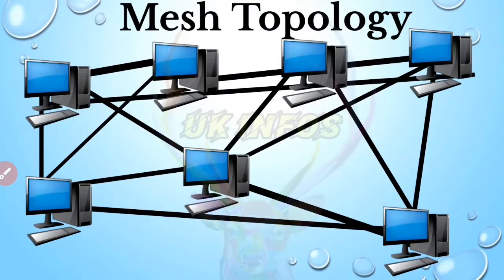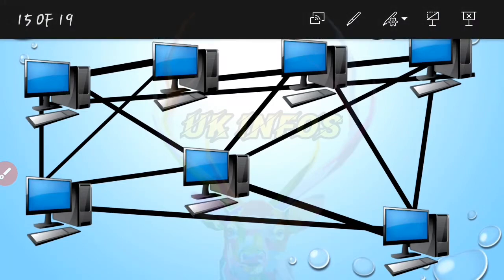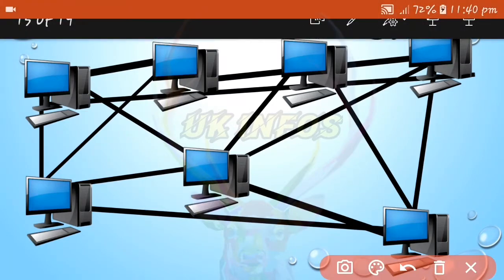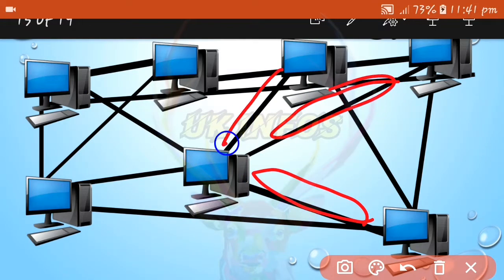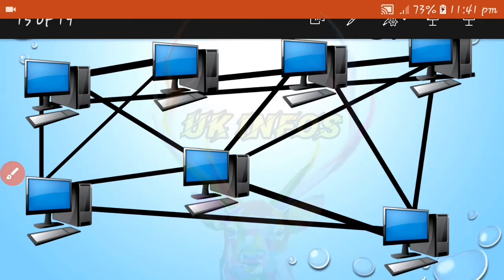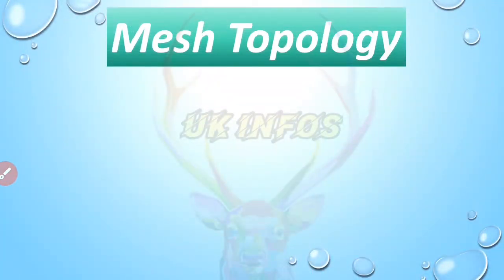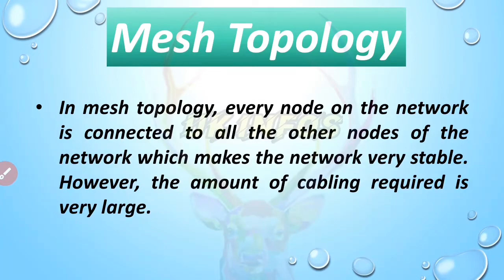In mesh topology, every node on the network is connected to all the other nodes, which makes the network very stable. However, the amount of cabling required is very large.